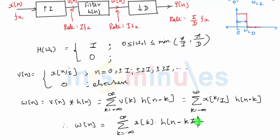So that's the expression of W of n. So this W of n goes to decimator block and final output Y of n is obtained. So let's now write down what will be Y of n, output of the decimator block.